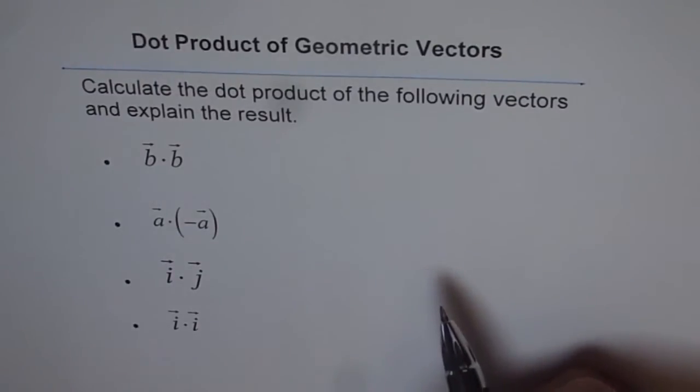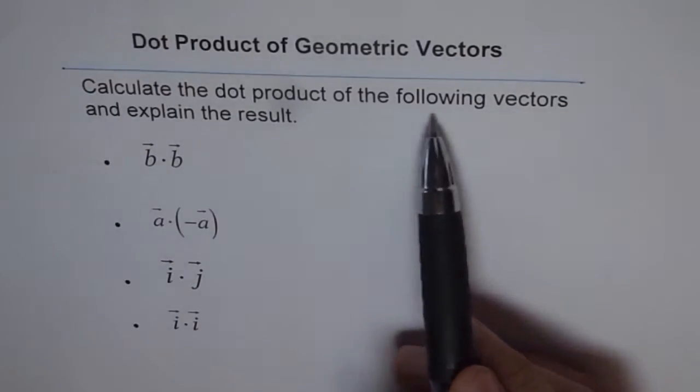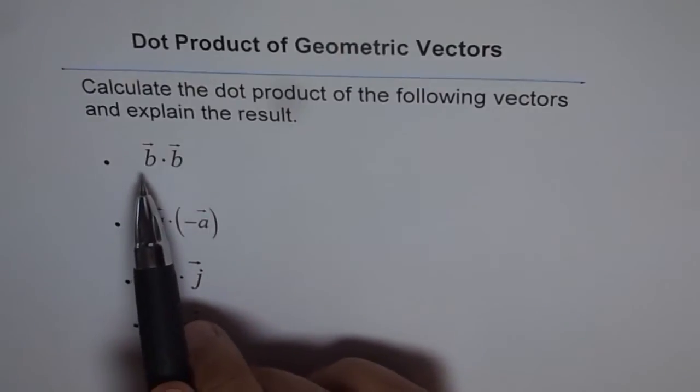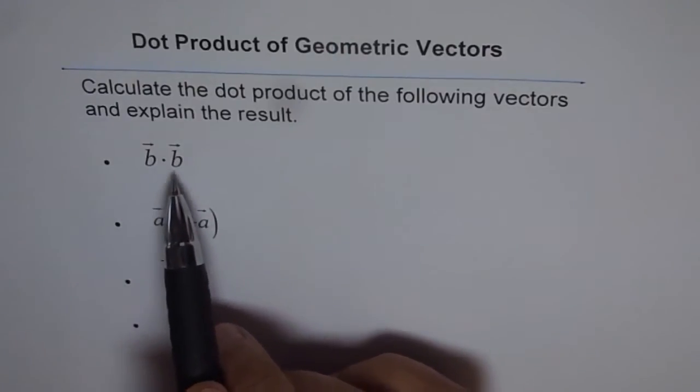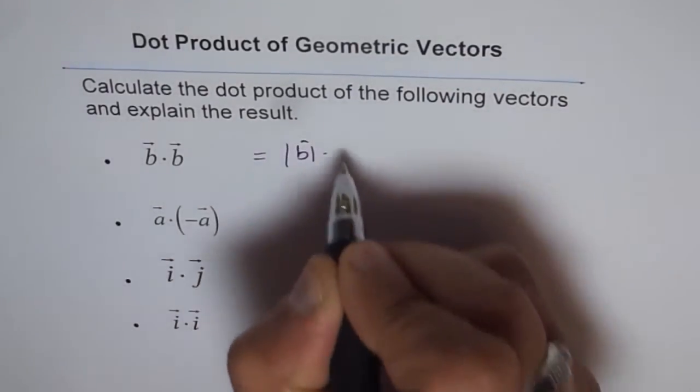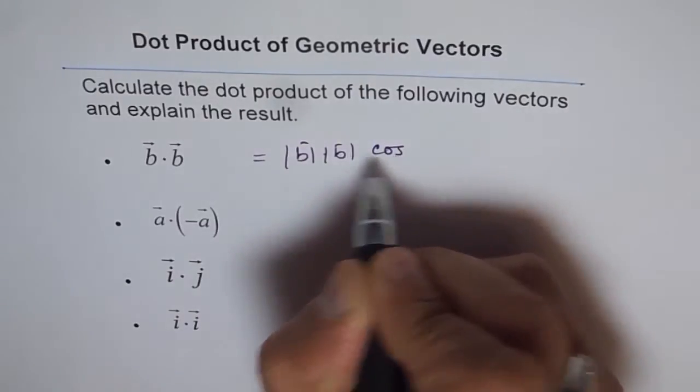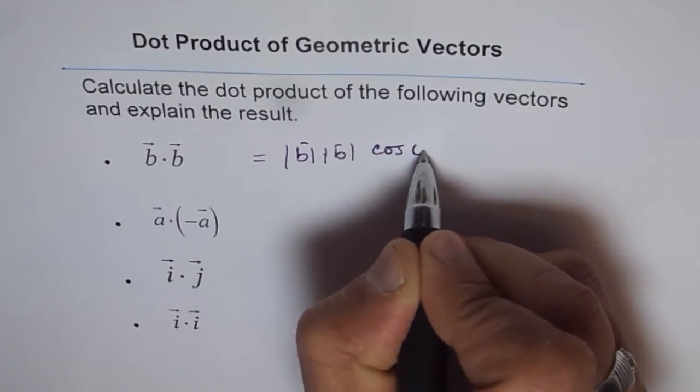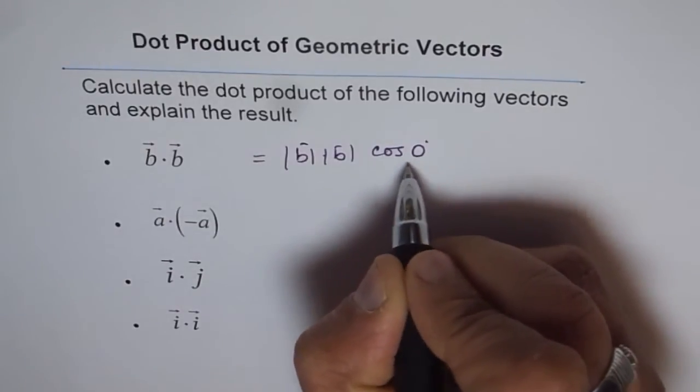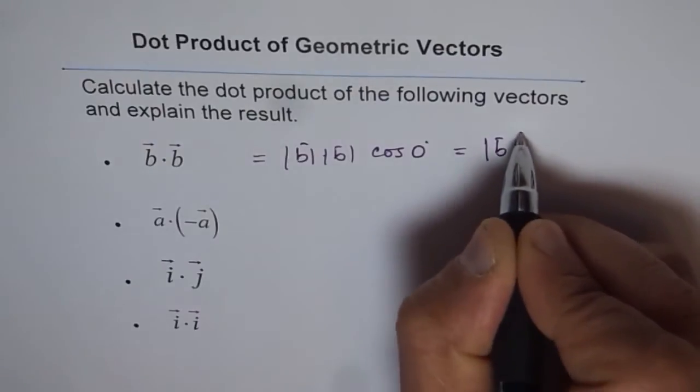Now here we have another interesting question. It says calculate the dot product of the following vectors and explain the result. So we have vector b and b dot b is what? Now b dot b should be magnitude of b times magnitude of b times cos of the angle between them, which will always be 0. And if the angle between them is 0, then cos of 0 is 1, and therefore we get magnitude squared.